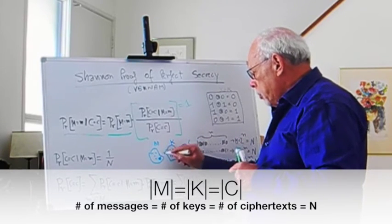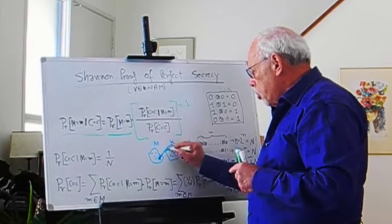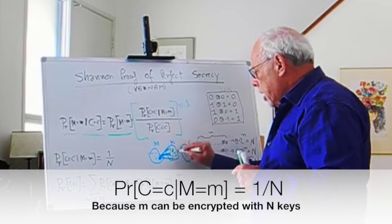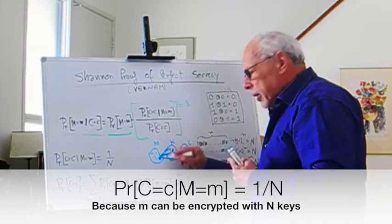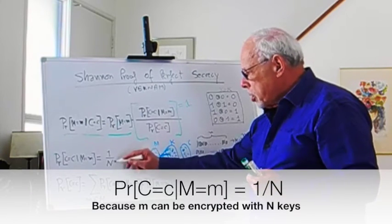Therefore, the chance for a particular ciphertext to come out when you use a particular m, which can be used with any of those keys, is 1 divided by the number of keys, which is 1/N.